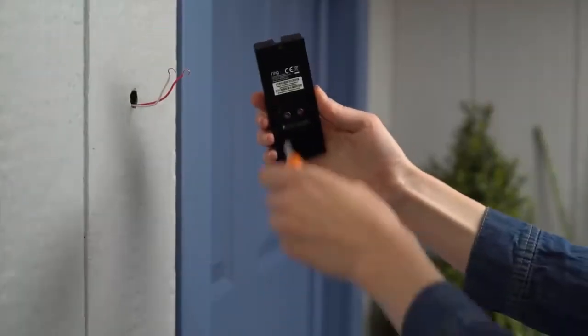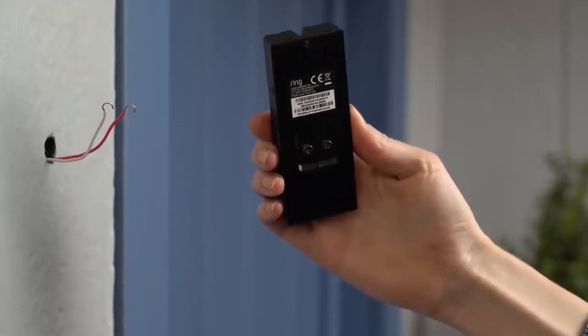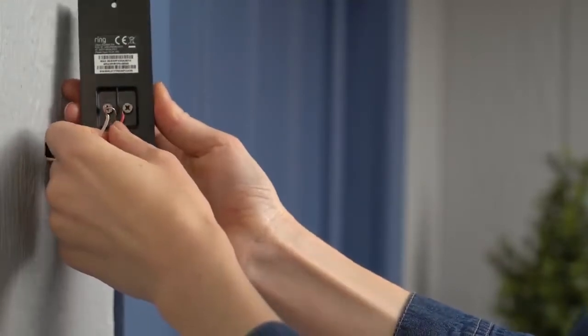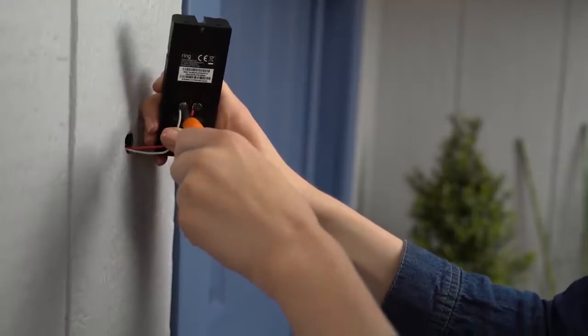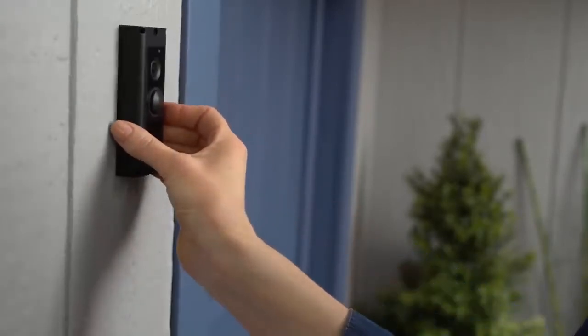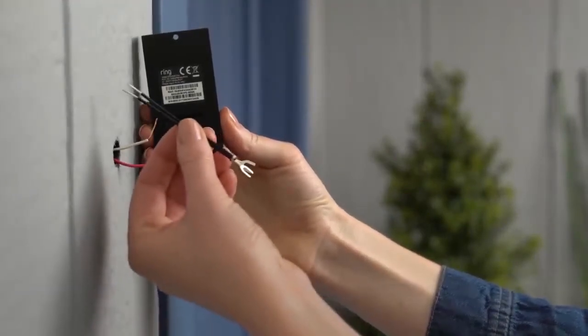Now you're ready to connect the wires. Loosen the screws on the back of your Ring Doorbell. Then take the wires coming out of your wall and wrap each one around one of the screws. It doesn't matter which wire goes to which screw, as long as both screws are connected. If you have trouble connecting your existing wires, you can use the included wire extenders to give yourself some slack.